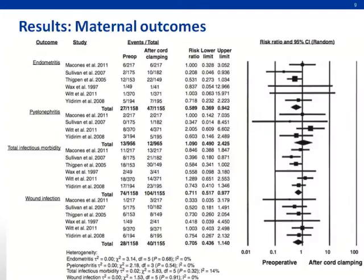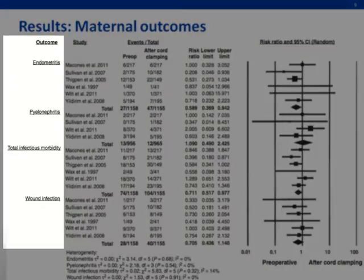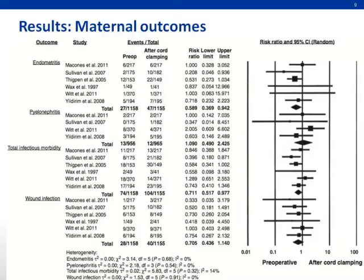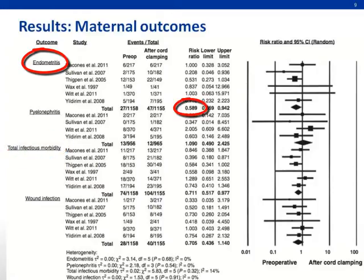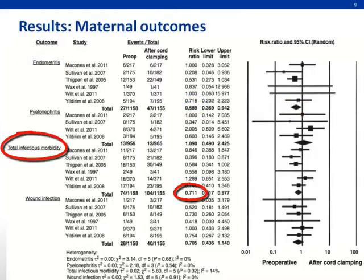Now let's look at the results of this meta-analysis. With regards to maternal outcomes — endometritis, pyelonephritis, total infectious morbidities, and wound infections — preoperative administration of antibiotics resulted in significant reductions in endometritis and total infectious morbidity compared to intraoperative administration. The risk ratio for endometritis is 0.589, with the lower and upper confidence interval limits not crossing unity, making it a significant result. Similarly, the risk ratio for total infectious morbidity is 0.711, which likewise does not cross unity, also a significant result.